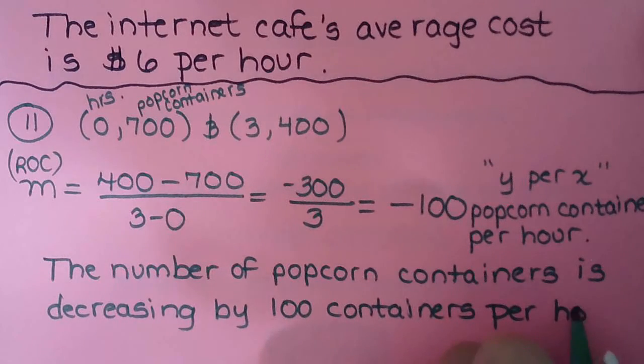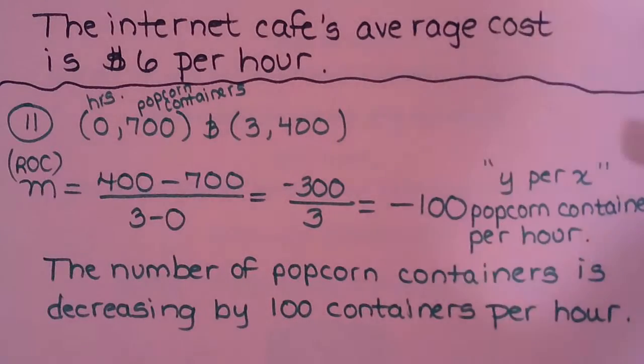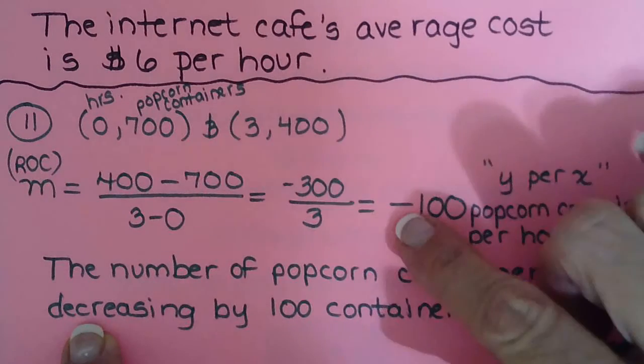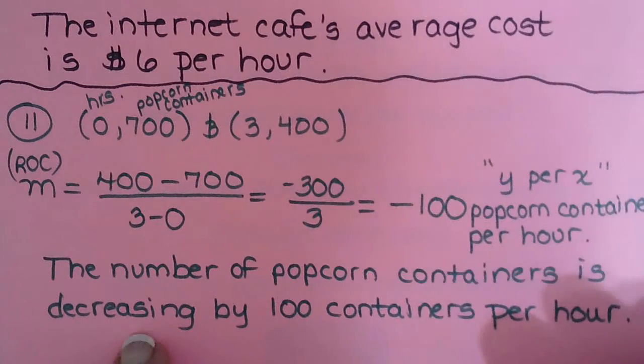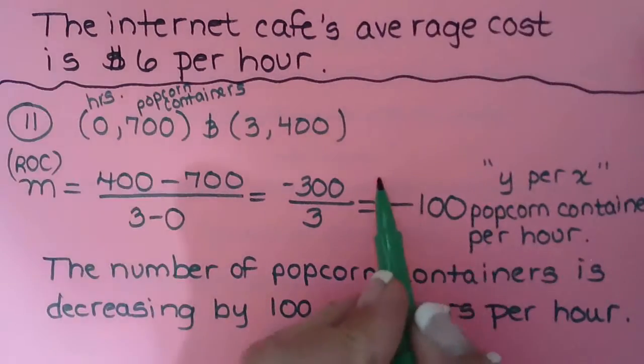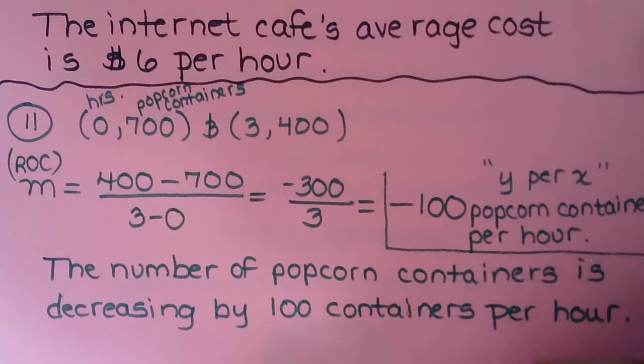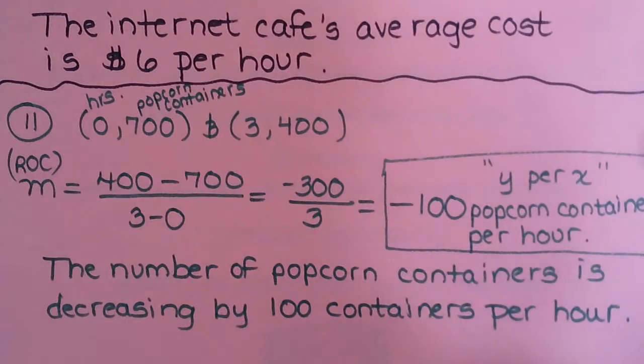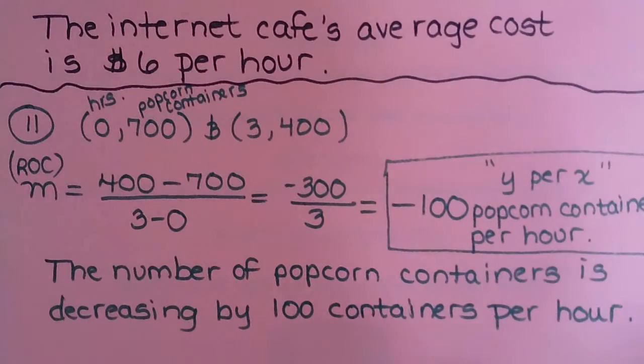So in other words, they're selling approximately 100 containers of popcorn per hour at the concession stand at the amusement park. So you guys understand the decreasing in place of the negative in the sentence? So when I just say what's the rate of change, this is what you write. When I say write a sentence, then you take the negative out and use the word decreasing instead.